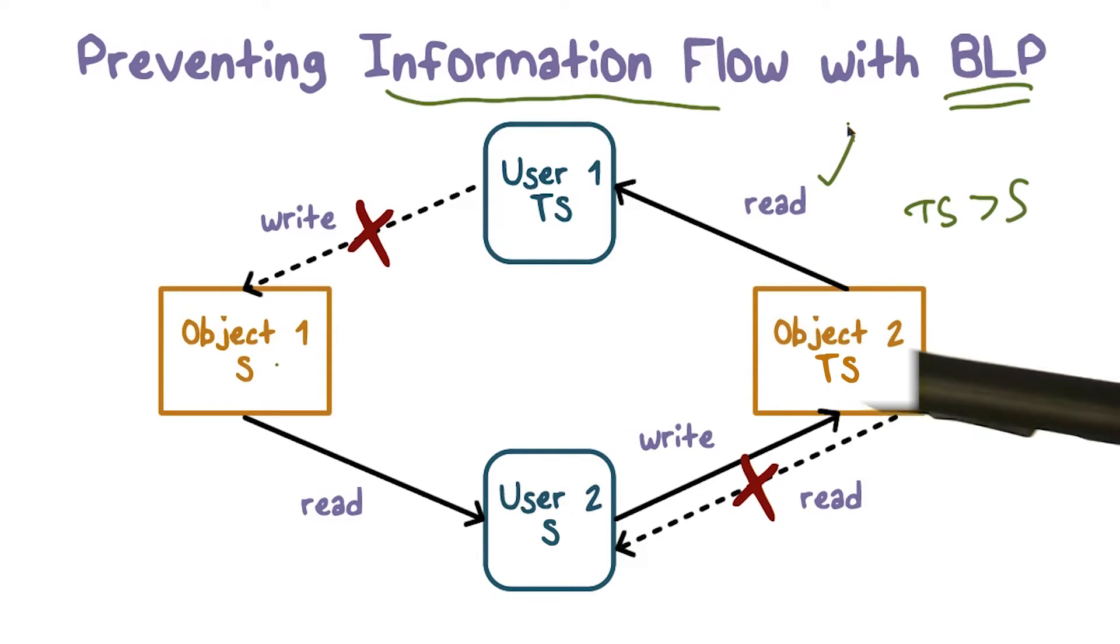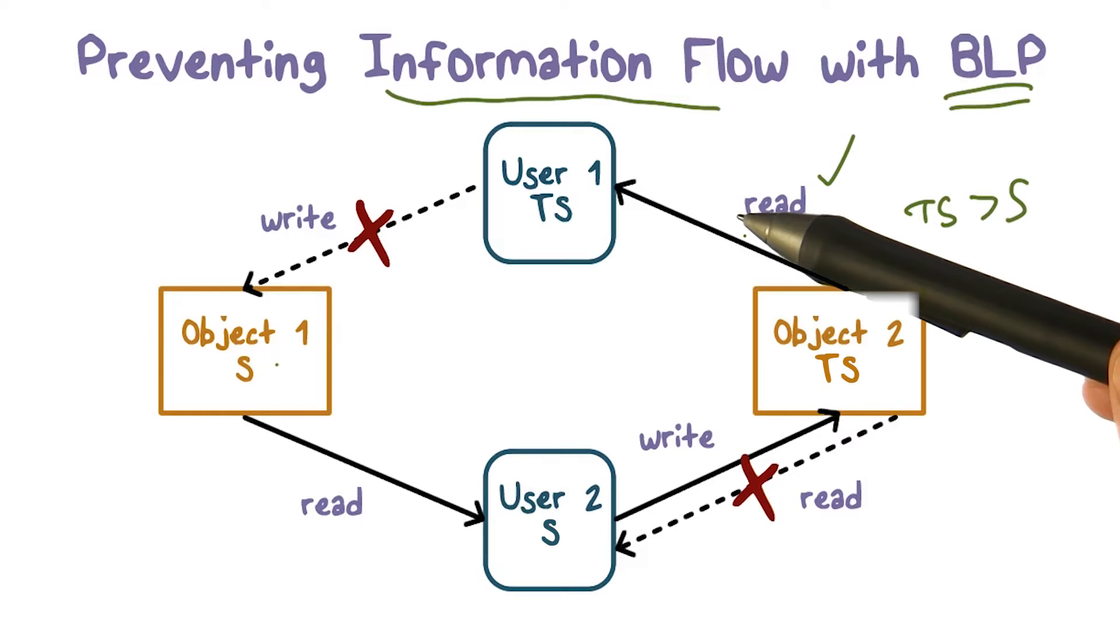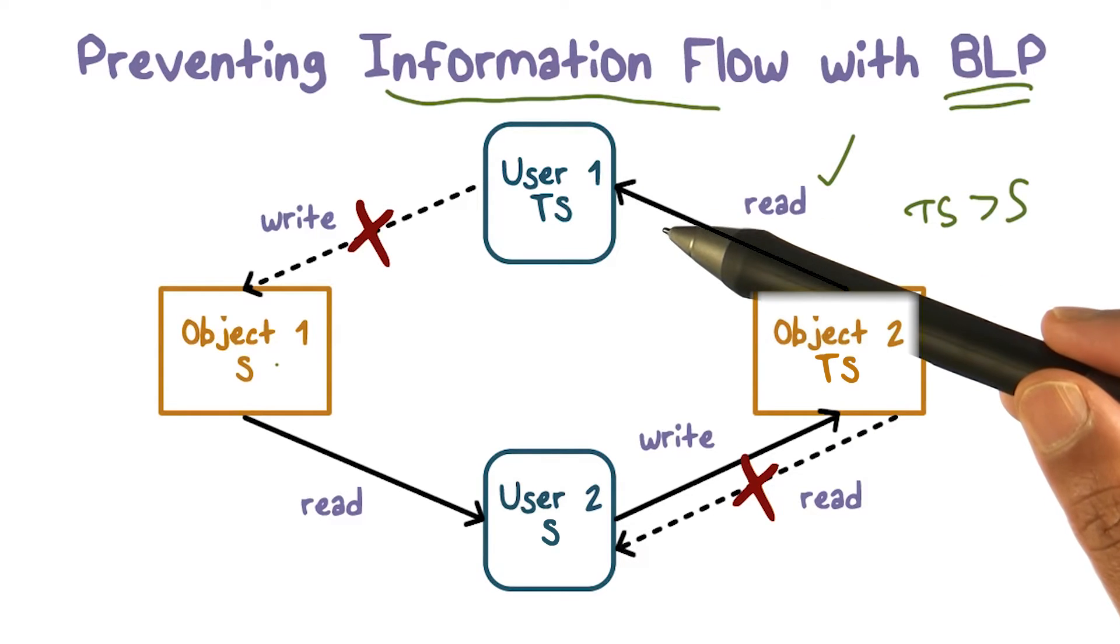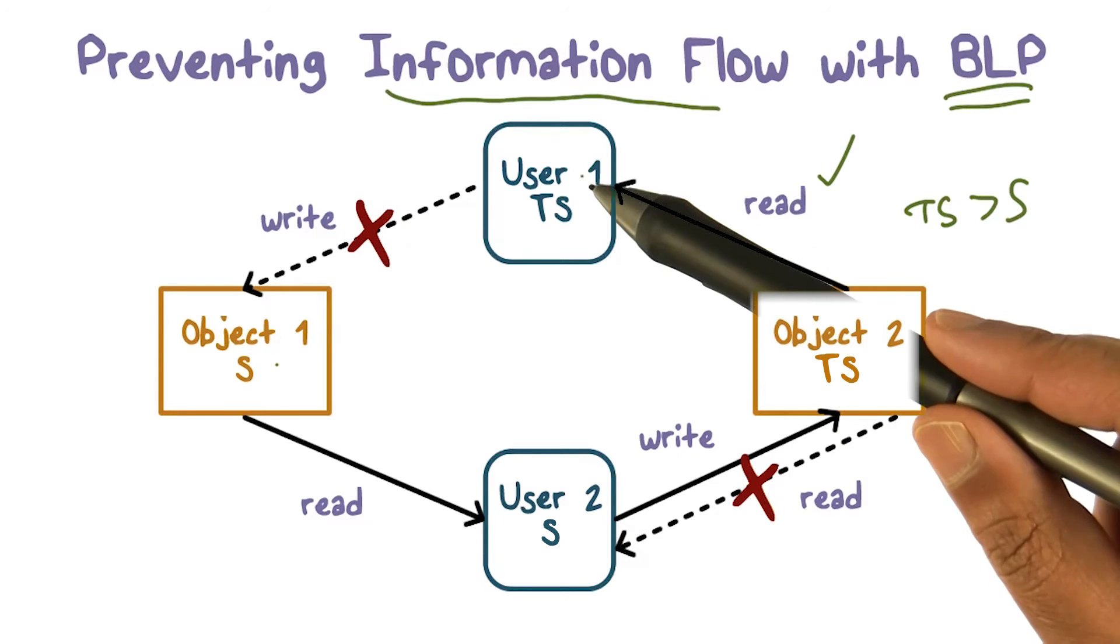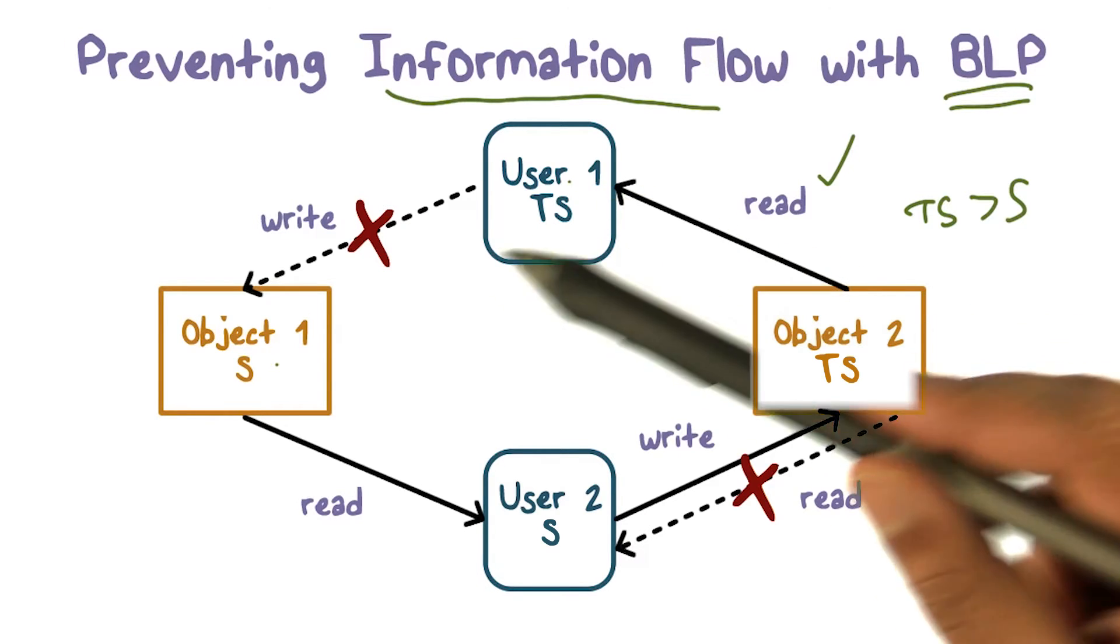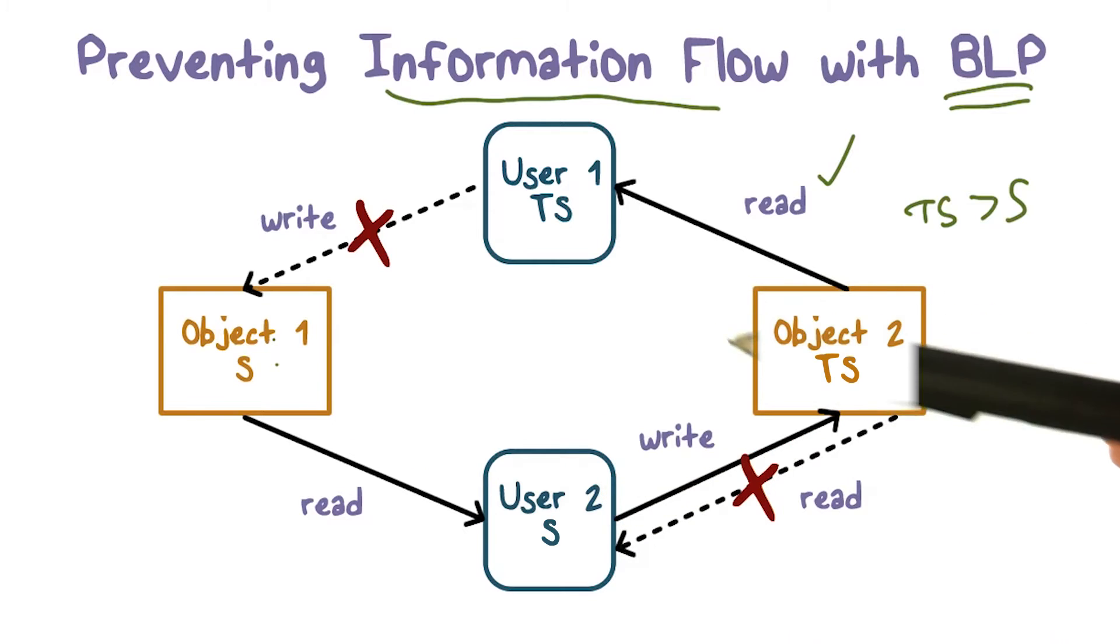And then they can, this information that they have pulled, remember the Alice, Bob, Charlie example in discretionary access control we had, where Alice gave read access to Bob who copied the data into a file that he created, and then passed it on to Charlie? Well, can user one do something like that? Can it create object two, in which it may be able to write this information that it just read from object one?